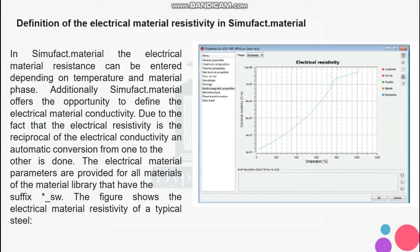and automatic conversion from one to the other is done. The electrical material parameters are provided for all materials of the material library that have the suffix underscore SW. The figure shows the electrical material resistivity of a typical steel.